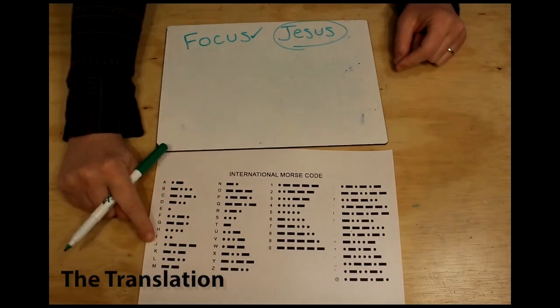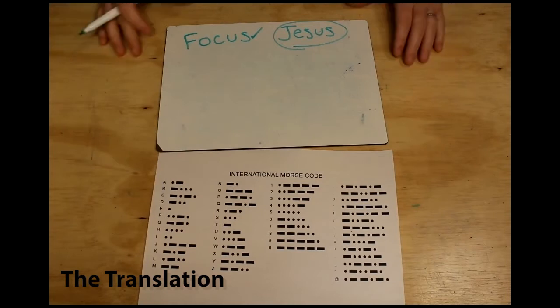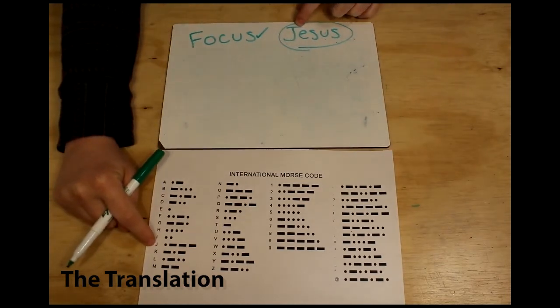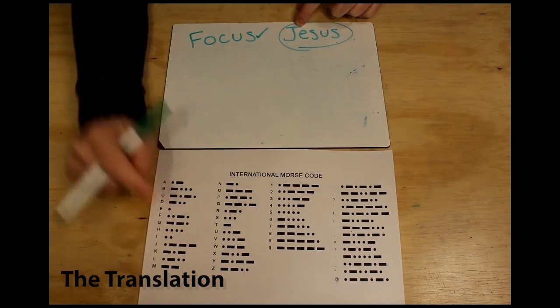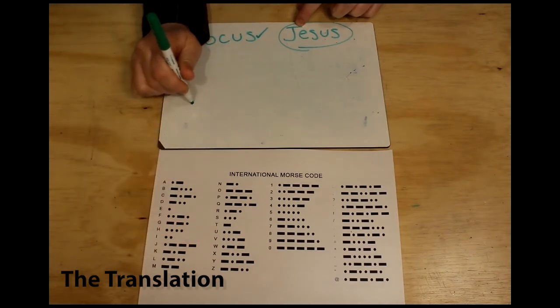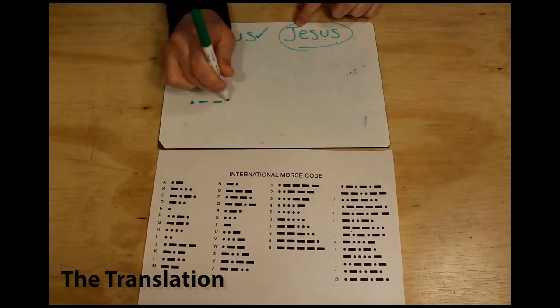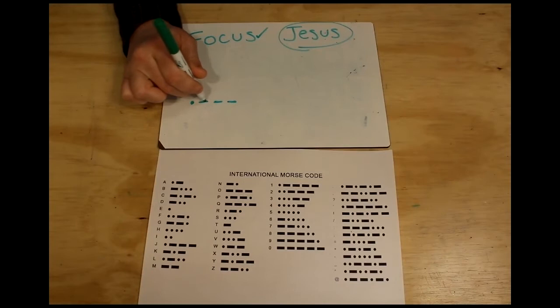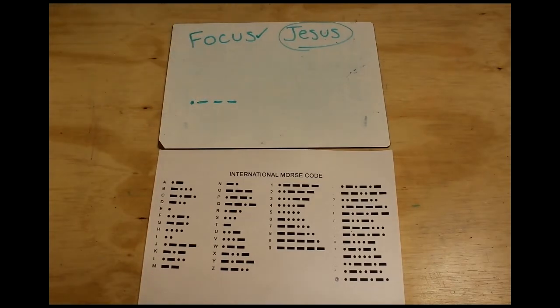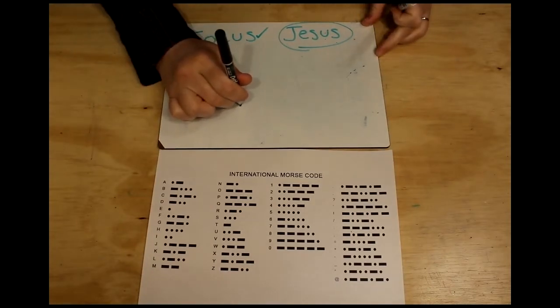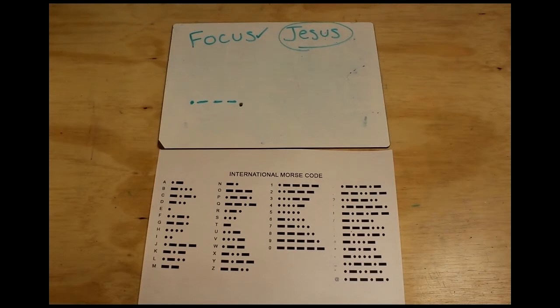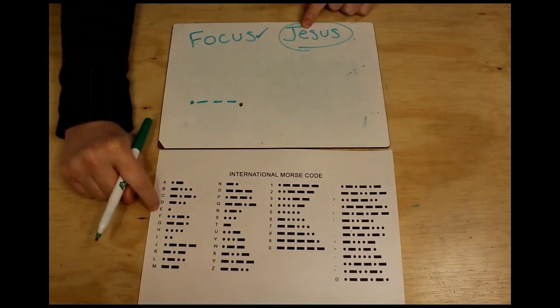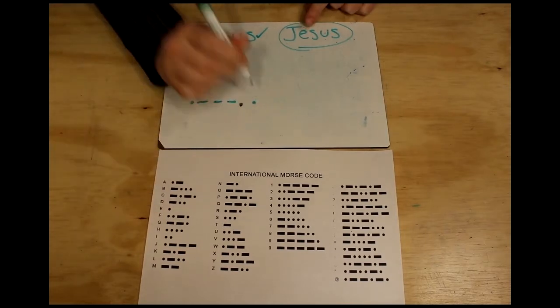My next step was to translate Jesus into Morse code so I would know what beads I would need. So I started with J, which was dit dah dah dah - the dits are dots and the dahs are dashes. I also used a black marker just so I would know where to put my seed beads in between my letters. I followed the same process for the rest of the letters.